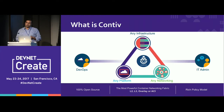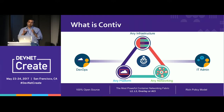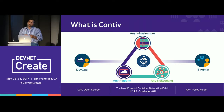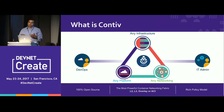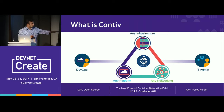The second point is the rich policy model. We have a built-in policy model within Contiv itself. Once you have container connectivity, you can define groups, endpoints, policies, and rules — these are objects available through APIs as part of the Contiv solution. Developers can define these and associate them with their containers or pods when they are deployed. In fact, I have a live demo where we'll see how we associate pods in a Kubernetes environment to different networks and different groups.